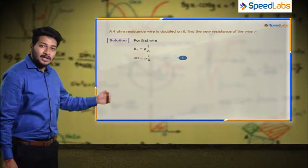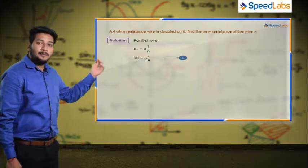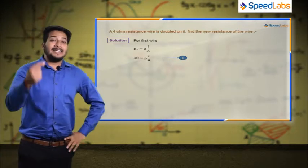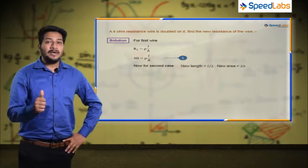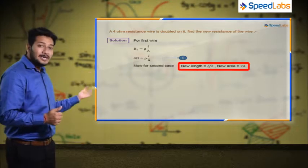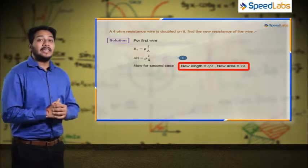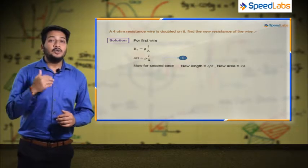rho into L upon A, so 4 ohm is equal to rho into L upon A. Now second case: length will be half, so new length will be L upon 2, and the new area will be 2A.